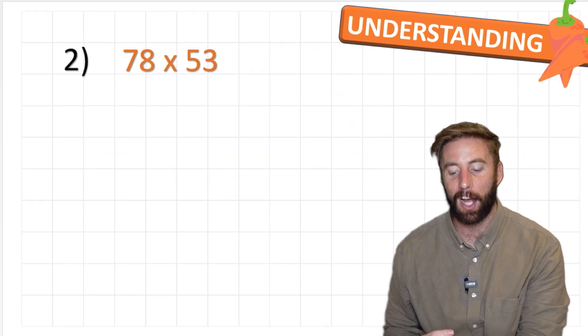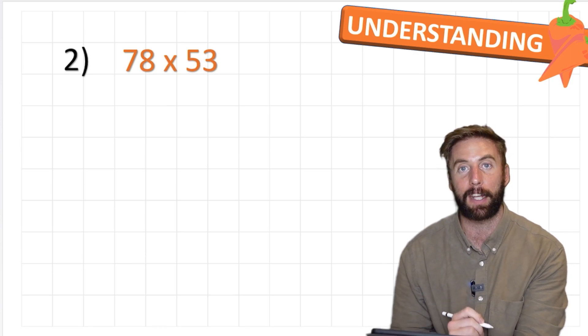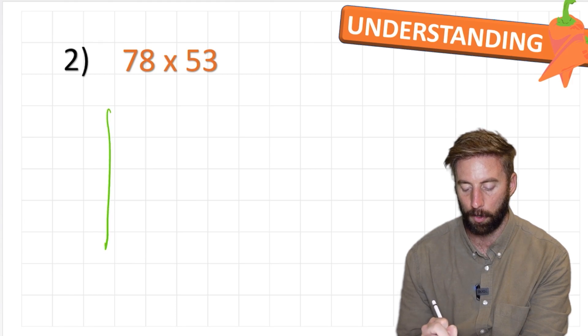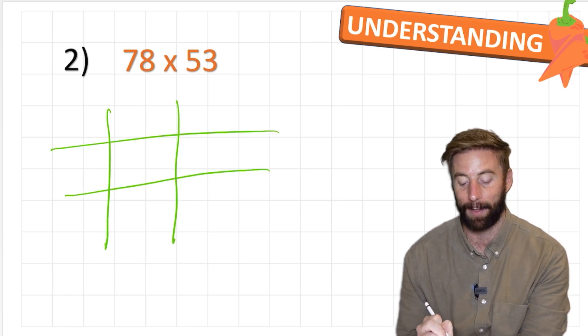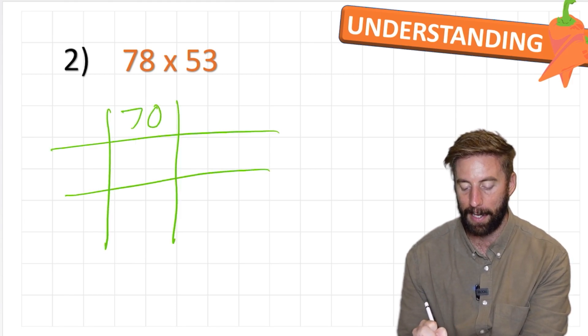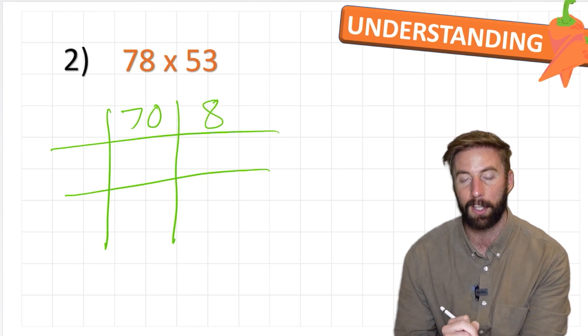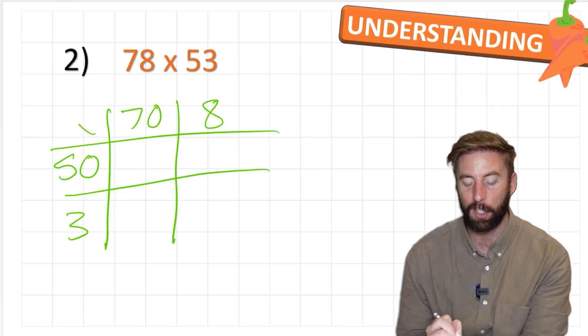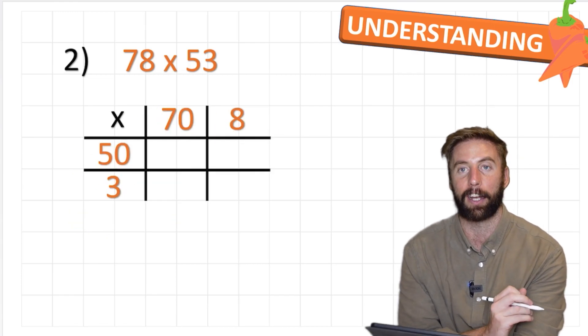Okay, let's look at our second challenge. Our orange chili challenge: 78 times 53. Now I'm going to jump straight into making my grid this time. I've still partitioned but I've just skipped a step. And 53, put my multiplication sign, and let's tidy it up.